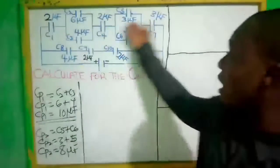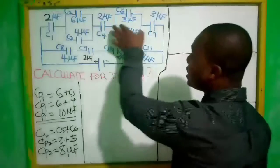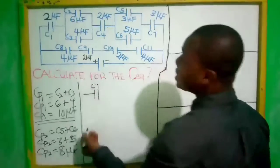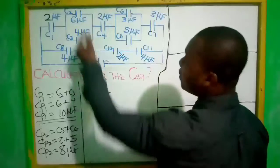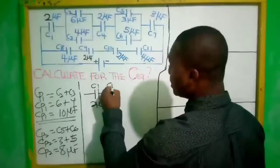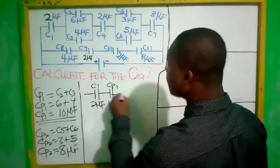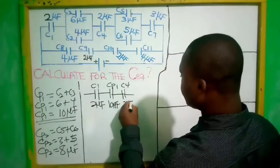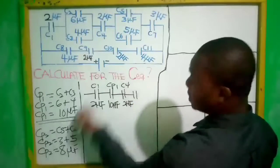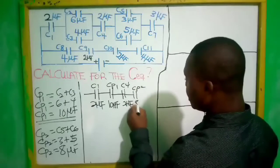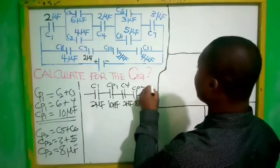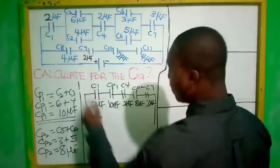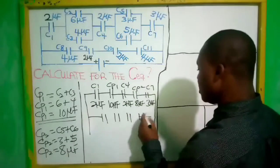Now that we've calculated the parallel groups, they each become a single equivalent capacitor and the circuit is now in series. Let's redraw: C1 stands alone at 2 microfarads, C_para1 is 10 microfarads, C4 is 2 microfarads, C_para2 is 8 microfarads, and C7 is 3 microfarads. This top line has four elements in series.